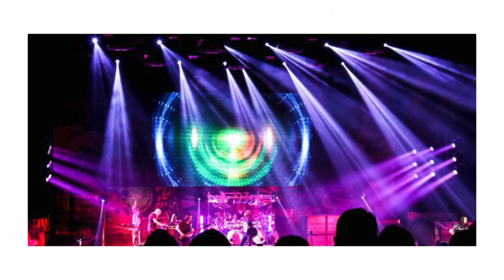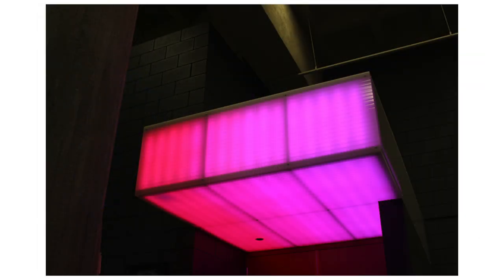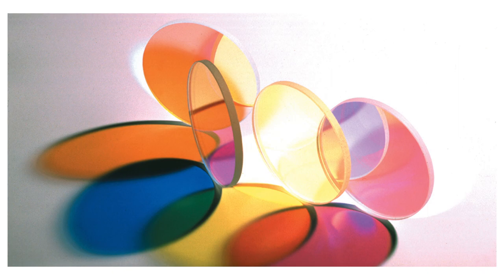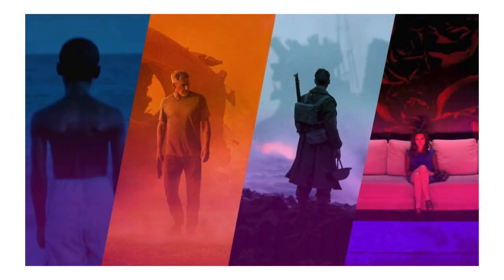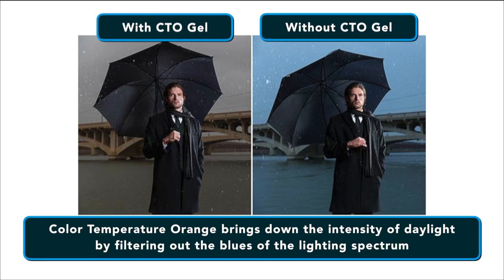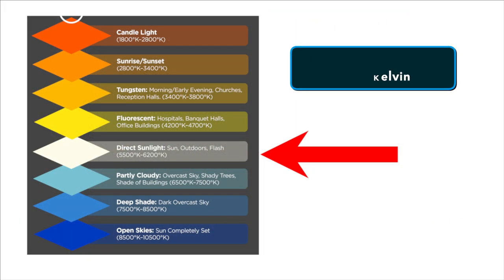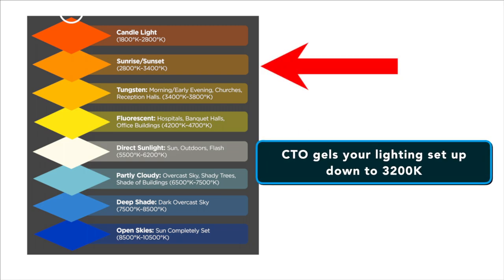Best of all, gels work with any types of light, including the newest LEDs. There are different gels for different purposes, so knowing what each gel does and the best time to use them is crucial. There are several main types of gels. The first are Color Temperature Orange, or CTO gels. Color Temperature Orange brings down the intensity of daylight by filtering out the blues in the lighting spectrum. Where daylight is considered to be around 5600 Kelvin, CTO gels bring your lighting setup down to about 3200 Kelvin, which more closely matches indoor lighting sources.